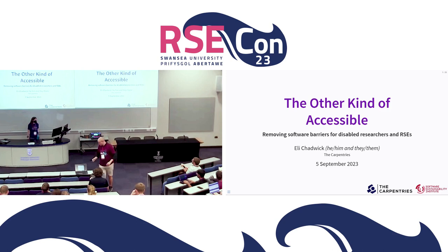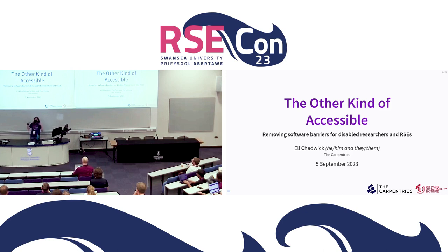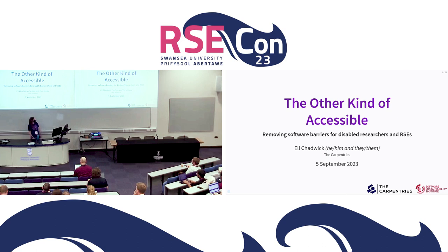I'm Eli. My pronouns are he, him, and they, them. For anyone who can't see me well, I'm a white, fairly deliberately androgynous man. I'm wearing a bright purple shirt that says 'accessible, equal web access for all.' I work at the Carpentries and I'm talking about the other kind of accessible, which is about removing software barriers for disabled researchers and RSEs.